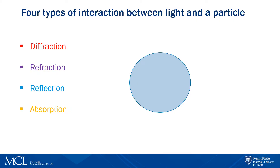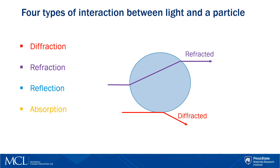There are four different types of interaction between light and particles. Diffraction: light is diffracted from the particle edge, which is why it's called edge diffraction. Refraction: light goes through the particles, changing its angle and intensity. Reflection: when light hits the surface of the particles and reflects back. And absorption: light is absorbed within the particle and can re-radiate as infrared heat.